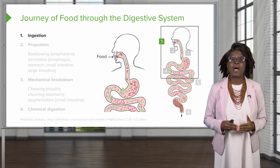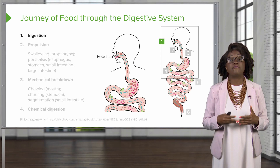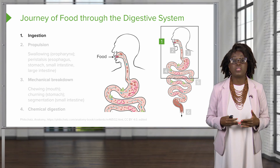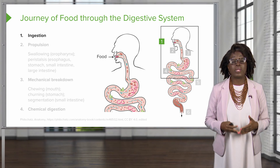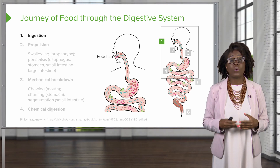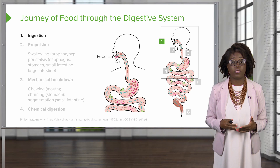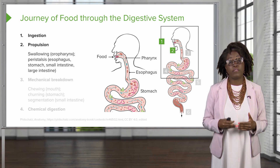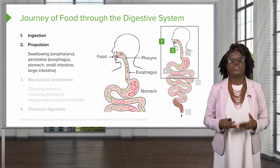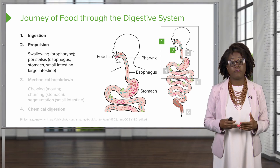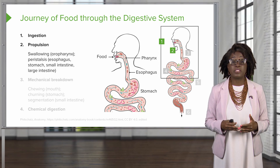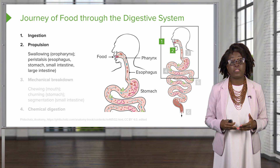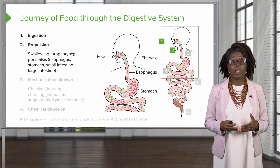Now let's look at the journey that food takes through our digestive system. Starting with ingestion or eating, food is going to be taken into the mouth. From there, we are going to propel the food through the GI tract through multiple different processes. First, in the oropharynx at the back of the mouth and in the throat, we have swallowing.